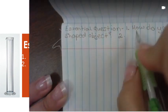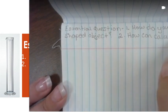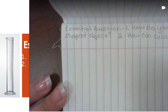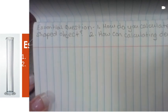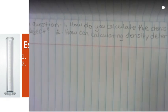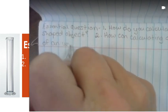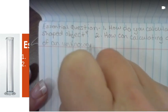Two. How can calculating density determine the identity of an unknown? Okay.